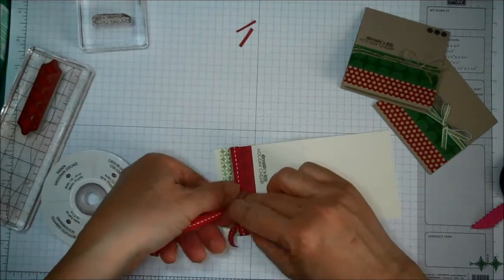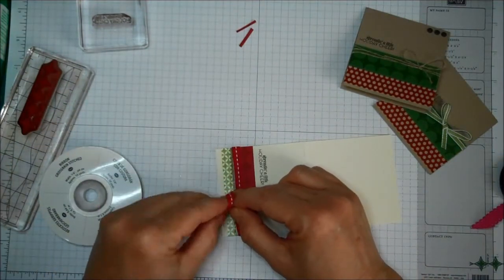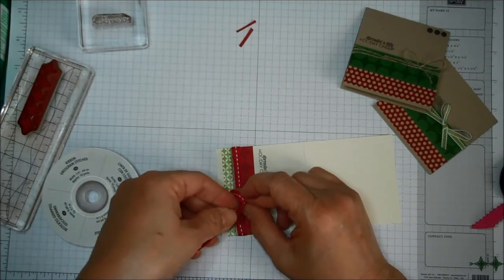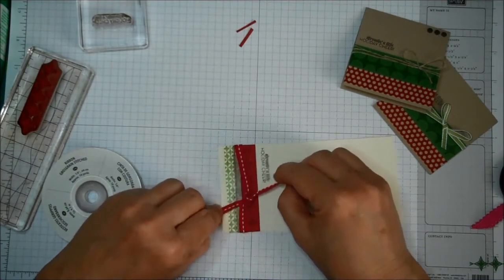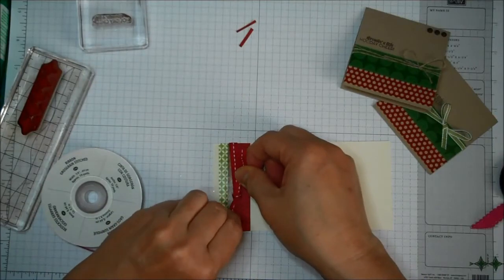I have White Ribbon, Early Espresso Ribbon, the Old Olive Ribbon. There are lots of Pear Pizzazz, Wild Wasabi, lots of options you could use here.